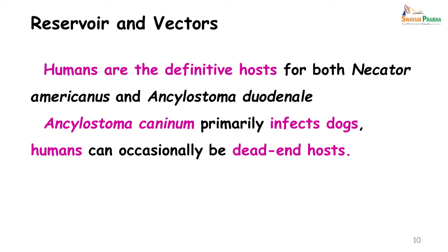For hookworm, man is the definitive host. The larva exists in the soil and also in the human host on its travels to the small intestine; however, the main form found in humans — the one which actually causes a lot of damage — is the adult worm. Ankylostoma caninum is the hookworm of dogs; very rarely it may infect humans, who then become the dead-end host because once the larva enters it cannot spread further in the human body.